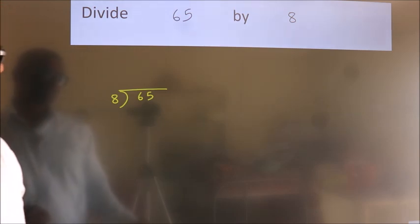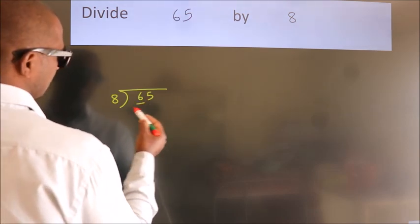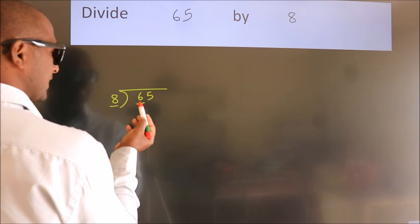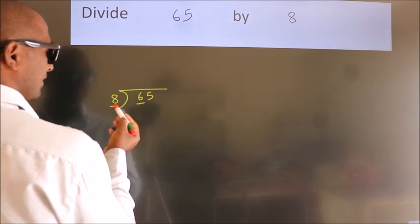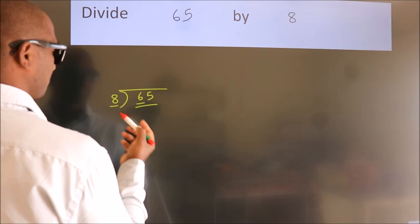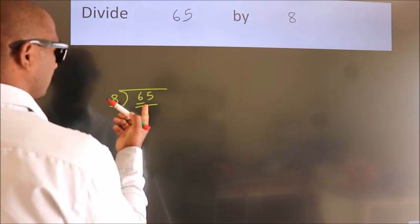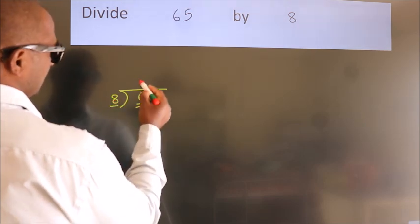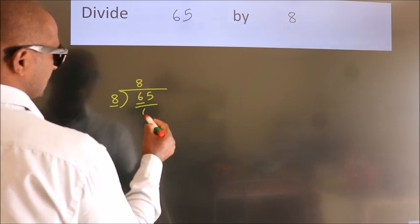Next, here we have 6, here 8. 6 is smaller than 8, so we should take two numbers: 65. A number close to 65 in 8 table is 8 times 8, 64.